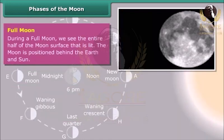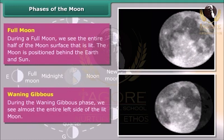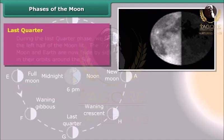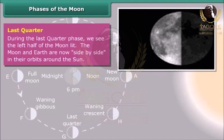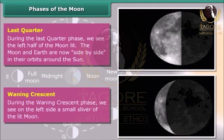Full Moon: During a Full Moon, we see the entire half of the Moon's surface that is lit. The Moon is positioned behind the Earth and the Sun. Waning Gibbous: During the Waning Gibbous phase, we see almost the entire left side of the lit Moon. Last Quarter: During the Last Quarter phase, we see the left half of the Moon lit. The Moon and Earth are now side by side in their orbits around the Sun. Waning Crescent: During the Waning Crescent phase, we see on the left side a small sliver of the lit Moon.